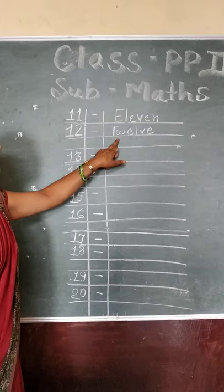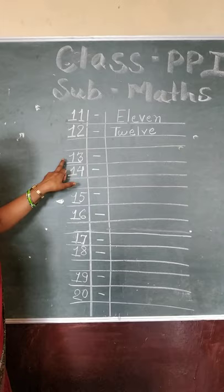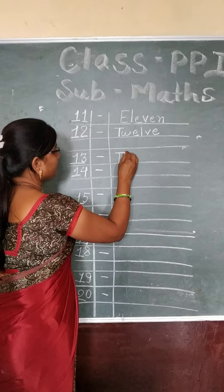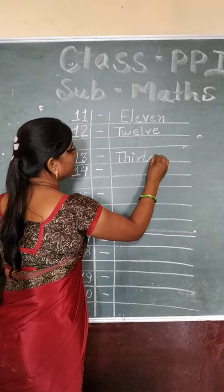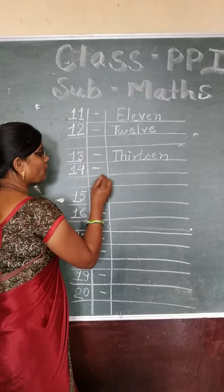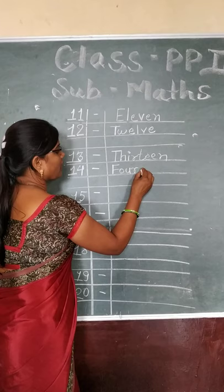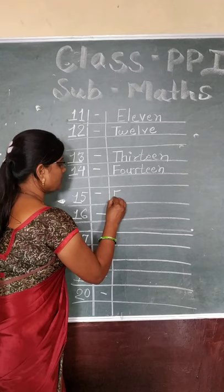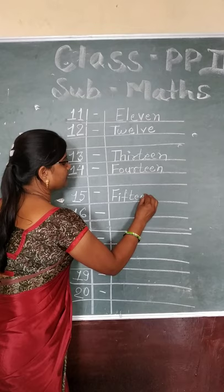After this, leave one box here. Ok? Then 13 — the first letter you will write in capital, children. Then 14 — F, O, U, R, T, W, N — 13. Ok? After that, leave a box. Then 15 — F, I, F, T, W, N — 15. Ok?